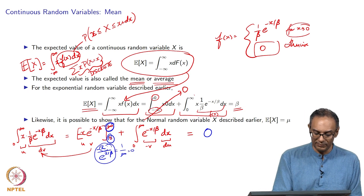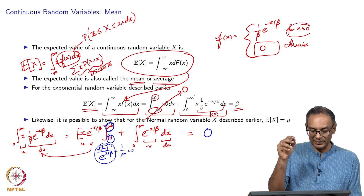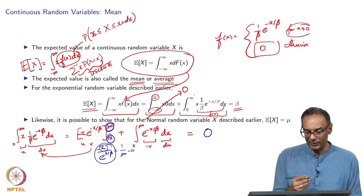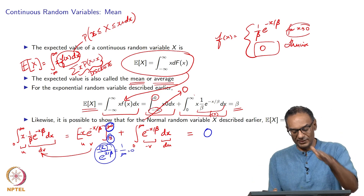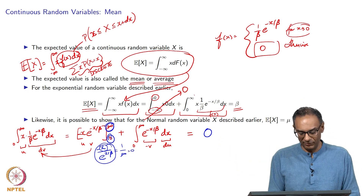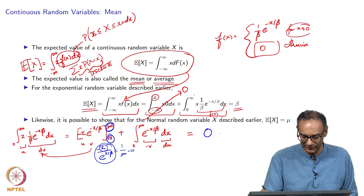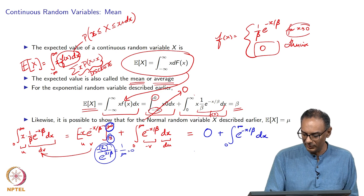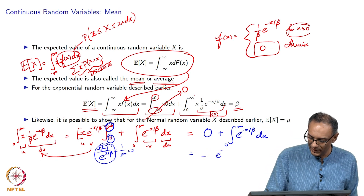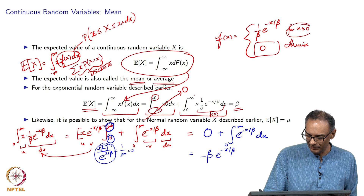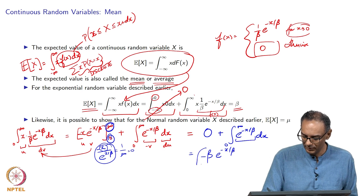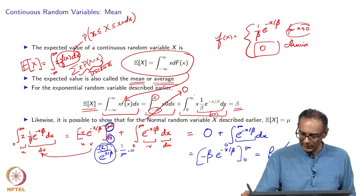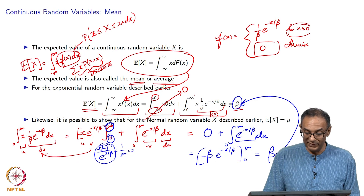Another way to think about this: x grows slowly to infinity whereas e^(-x/beta) crashes down to 0 very quickly, so the product is 0. For the remaining integral from 0 to infinity of e^(-x/beta) dx, the antiderivative is -beta * e^(-x/beta). Evaluating from 0 to infinity: at infinity we get 0, at 0 we get 1, giving us beta. So this is how we derive E[X] = beta for the exponential distribution.